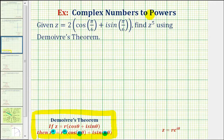So, for our example, notice that n is equal to five. So, we'll have z to the fifth equals r to the fifth, or two to the fifth, times cosine of five times pi over six plus i sine five times pi over six.